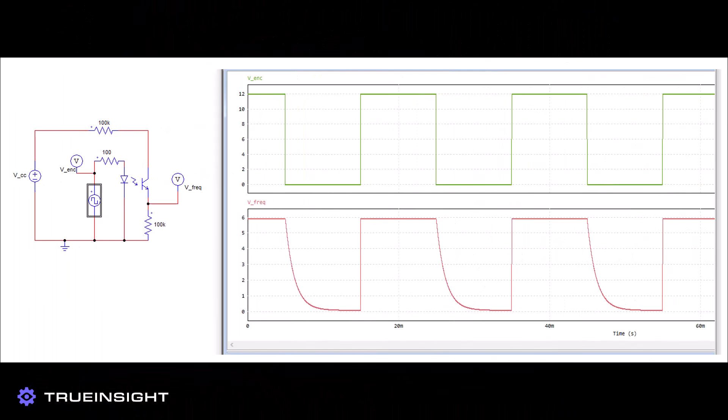Before adding any of this to the actual robot car, we simulated this subsystem in Altair PSIM by designing an optocoupler circuit. Once we verified the results in the simulation, we were ready to add the encoder and arrowhead sensor to the drive wheels.